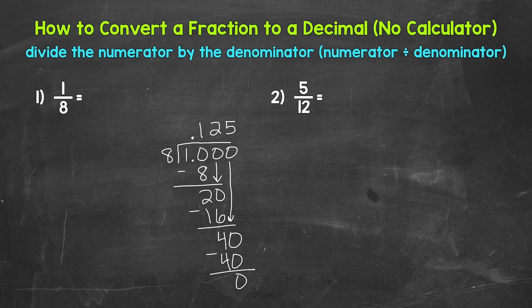We get 0.125, one hundred twenty-five thousandths. One eighth equals 0.125. You'll notice when I rewrote that decimal I started with a zero and then the decimal — this is common when writing decimals because it helps us recognize and see the decimal. We don't want the decimal to get overlooked.